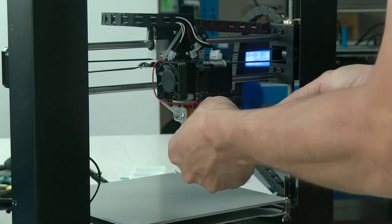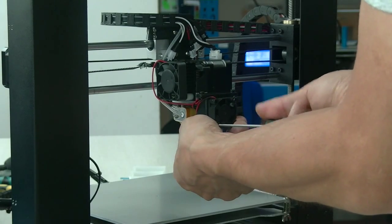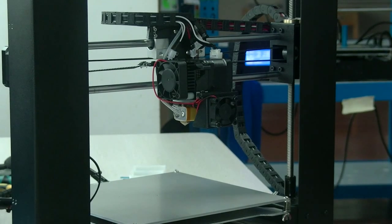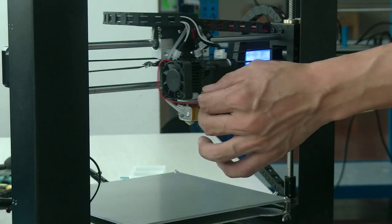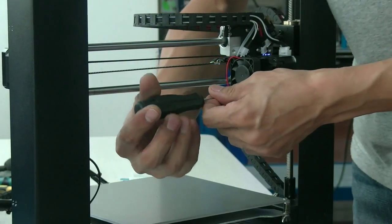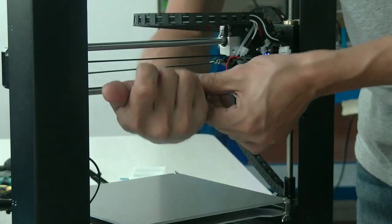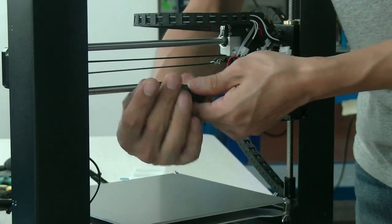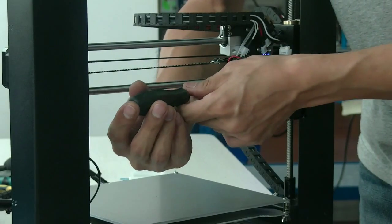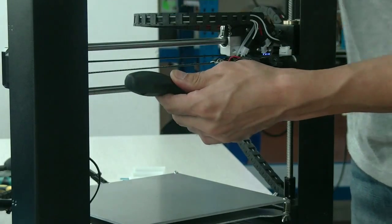And then you relock it. This way you are replacing the cooling fan and also the other fan. Next, we are going to replace the extruder cooling fan. First unlock the two bolts at the bottom of the extruder.